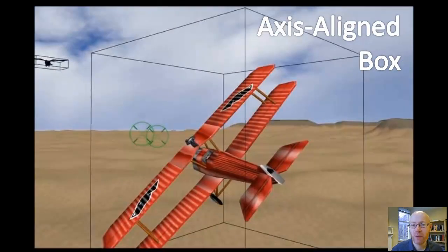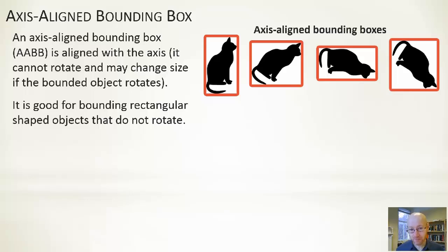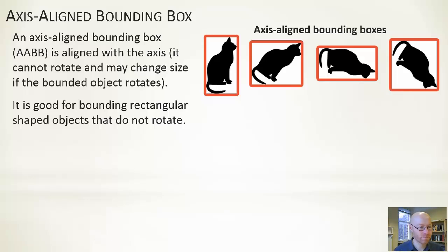Next is the axis-aligned bounding box (AABB). It's called axis-aligned because the bounds — the x and y sides of the box — must always be aligned with the x and y axes; the box can't rotate. Looking at the picture of the cat: in all cases we've defined an AABB that tightly bounds the cat, but as the cat rotates the shape and size of the bound itself also has to change. That's a limitation — it's not great for things that can rotate, since you have to recalculate the bound. It's best suited to roughly rectangular objects that don't rotate, such as characters in side-on 2D games.